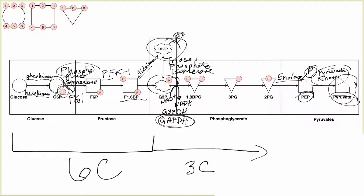The same goes for PEP to 2-phosphoglycerate — this reaction is catalyzed by enolase, taking an enol from phosphoenolpyruvate and converting it into 2-phosphoglycerate. Moving from 2-phosphoglycerate to 3-phosphoglycerate, this reaction is driven by phosphoglycerate mutase. Mutases are enzymes that move functional groups. Technically these are isomers, but since we're specifically moving a phosphate group, it makes more sense to call it a mutase.